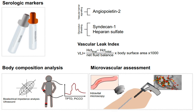How to diagnose and monitor CLS: serologic markers of vascular barrier signaling include ANGIOPOIETIN2, which reflects endothelial dysfunction and increased vascular permeability, and markers of glycocalyx shedding — SYNDECAN1 and heparin sulfate — which are biomarkers indicating the breakdown of the endothelial glycocalyx, a critical protective layer commonly seen in CLS.